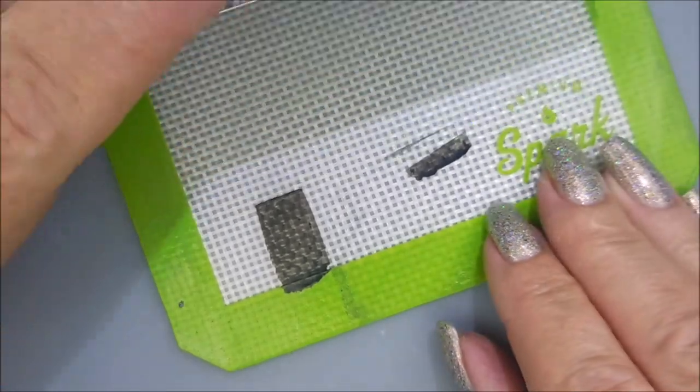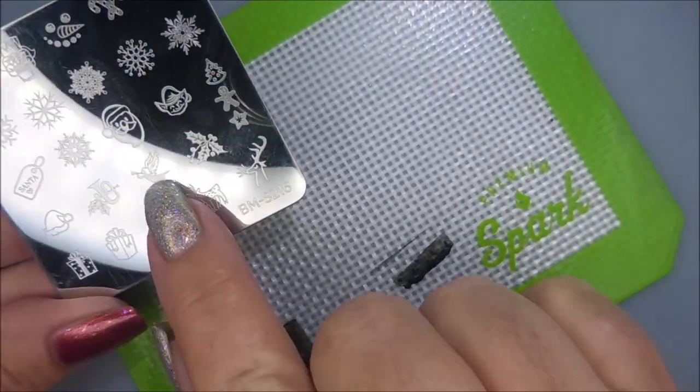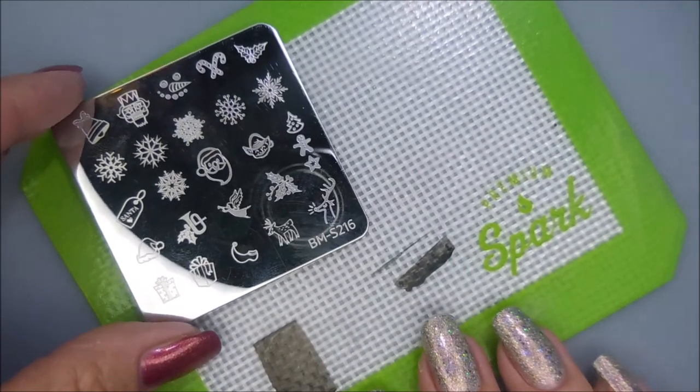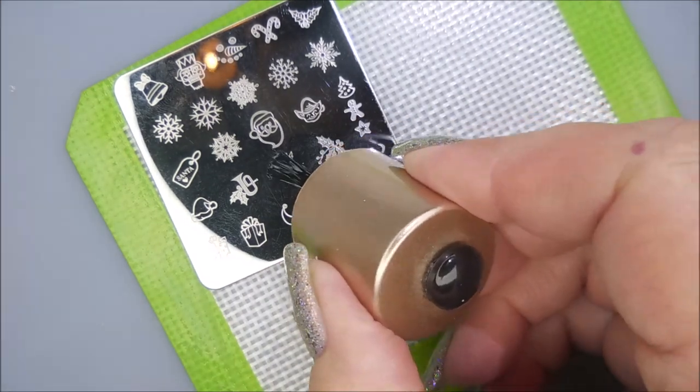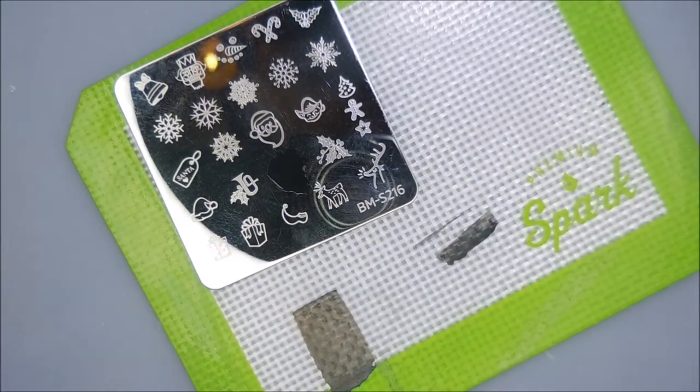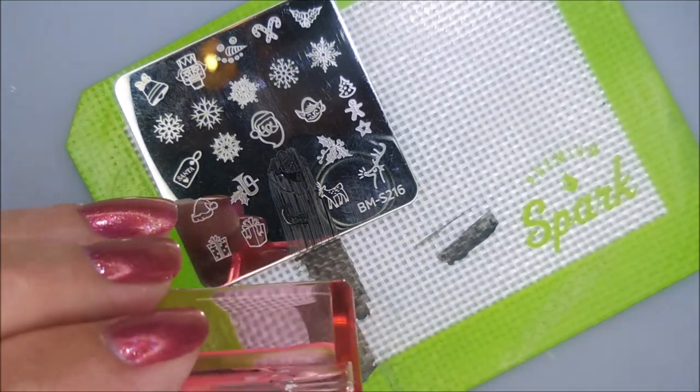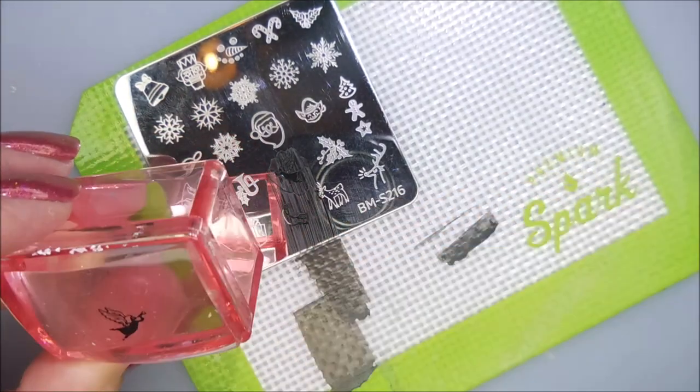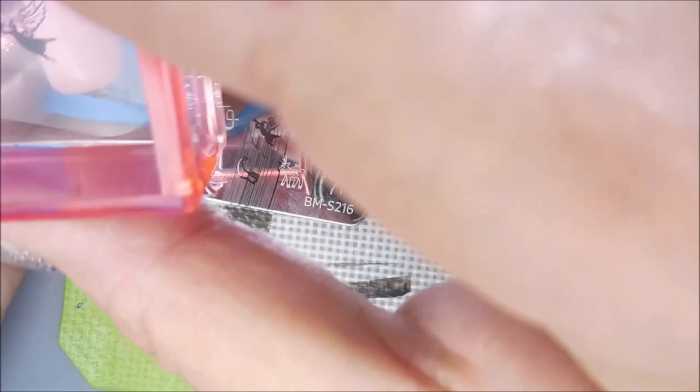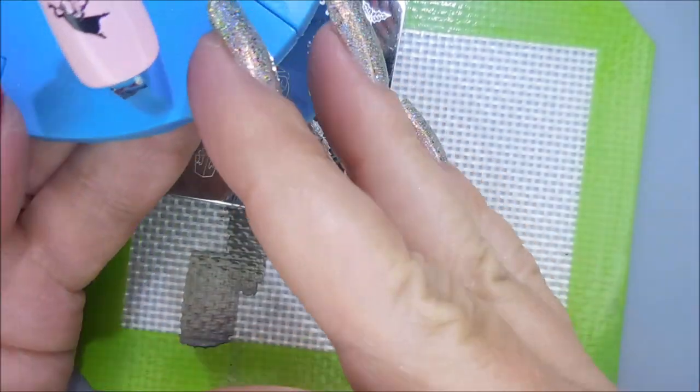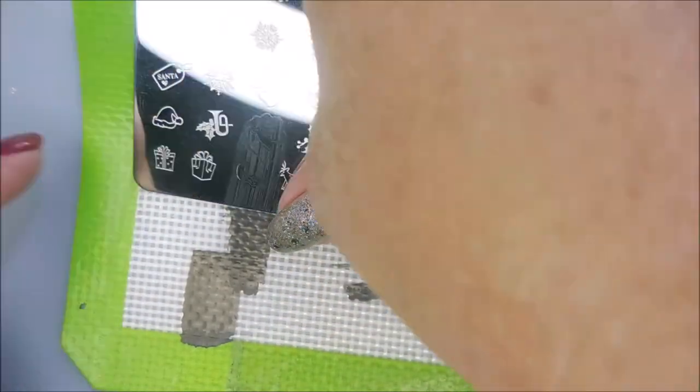And the next plate I have here is from Bundle Monsters, Maniology. And this little image is right there. And this is BMS216. Like I said, some of these plates, I don't know if they're available. This one's kind of a smaller image, which I like because that means it should fit well on most nails. Oh, she's adorable. I love her. That's probably one of my favorites.